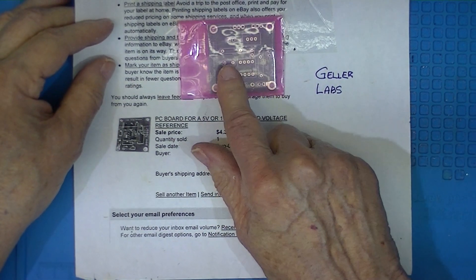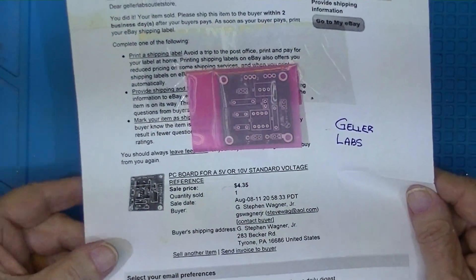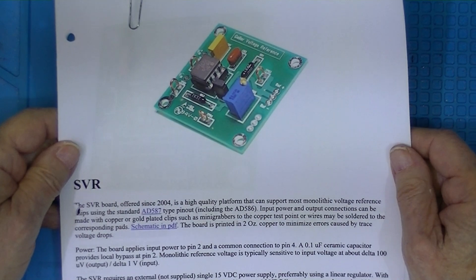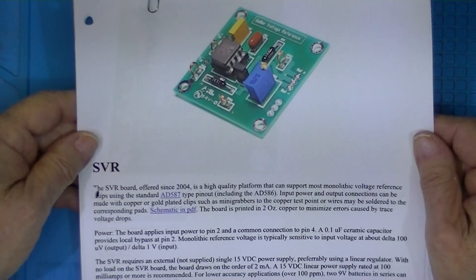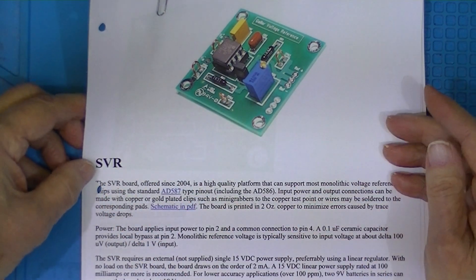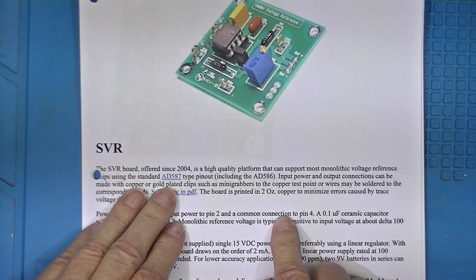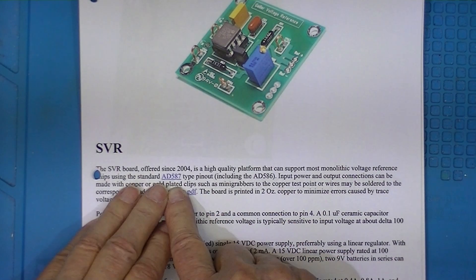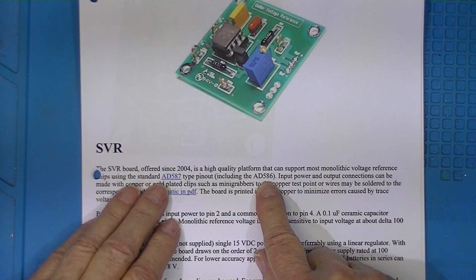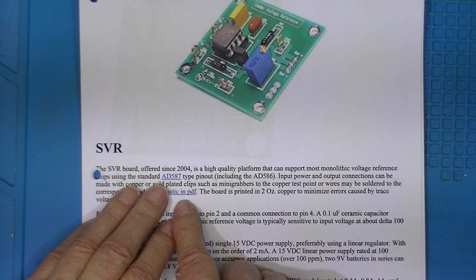Or he sold the board and a kit, and I believe he sold the board fully constructed. Here is a print of what he called the SVR, which is probably a standard voltage reference. This one can use either an AD587 or an AD586. The difference is the 586 produces 5 volts and the 587 produces 10 volts.